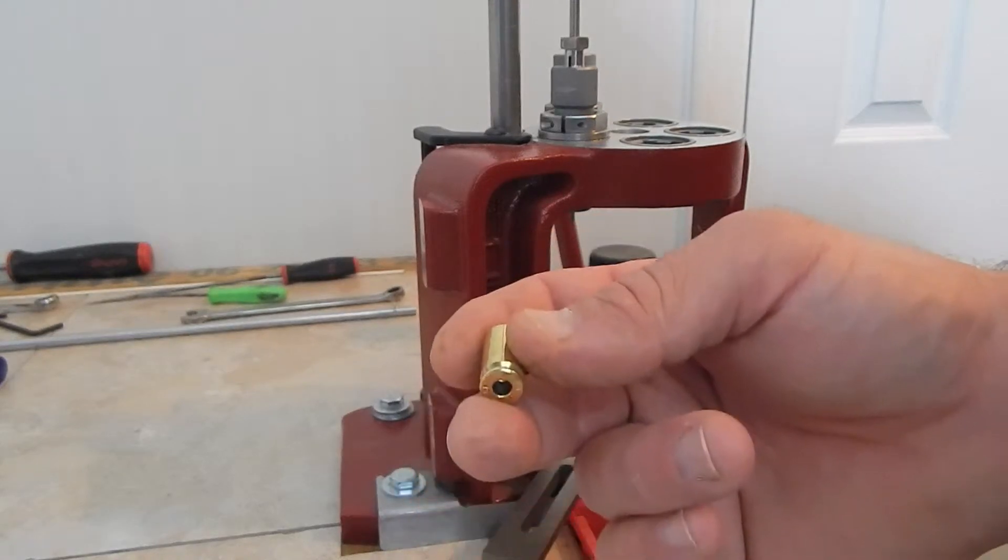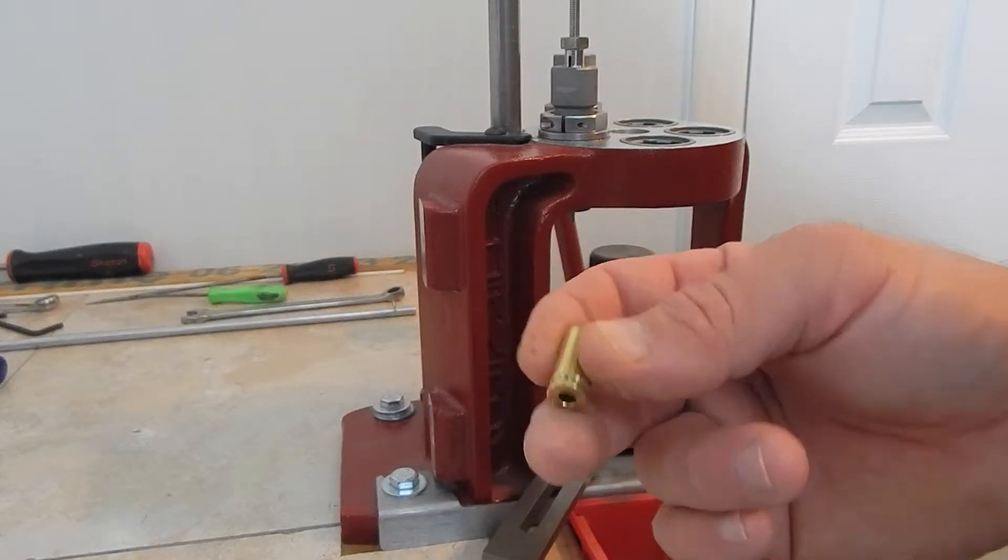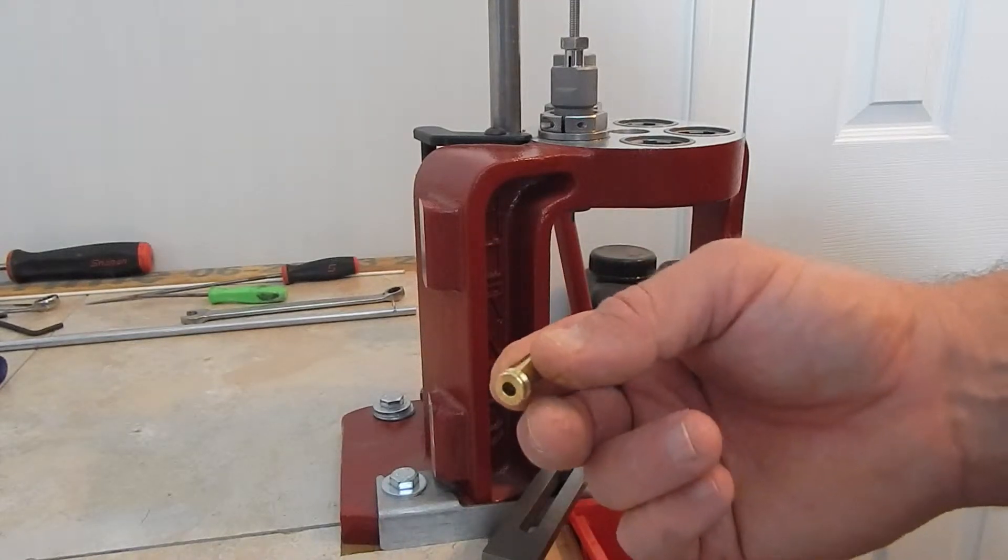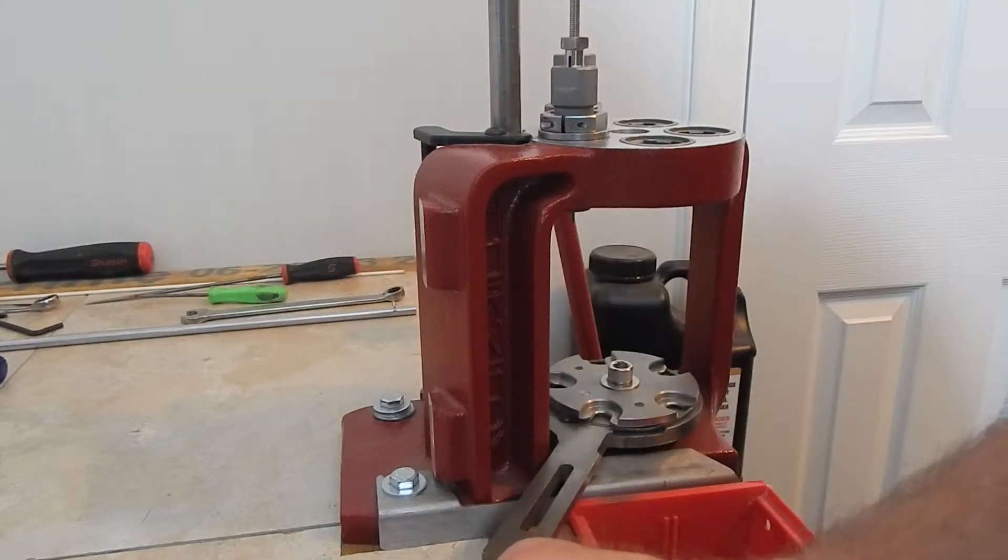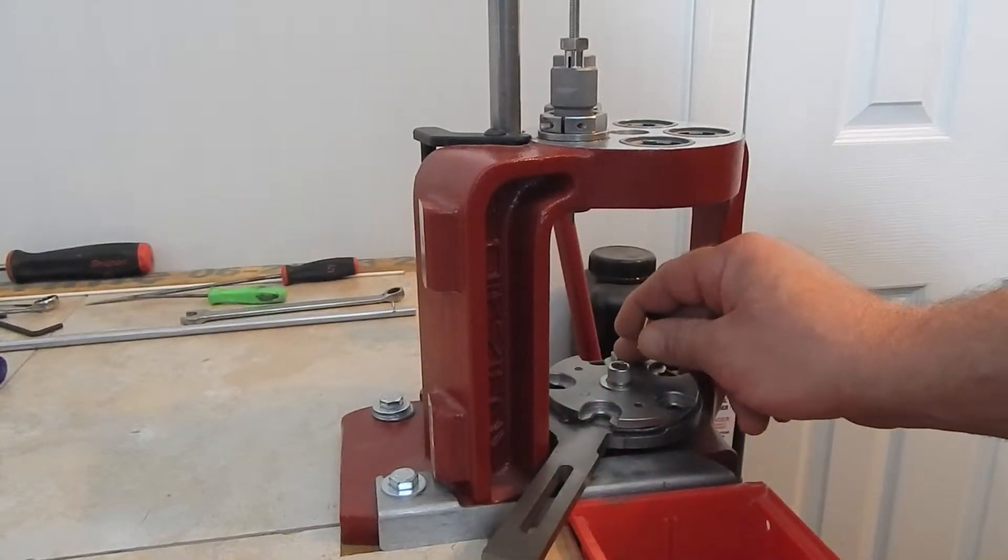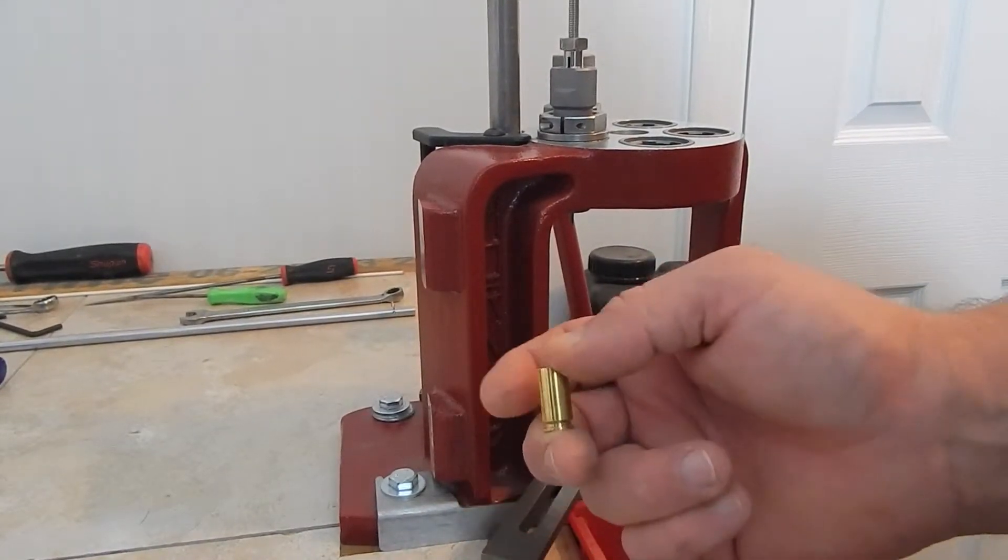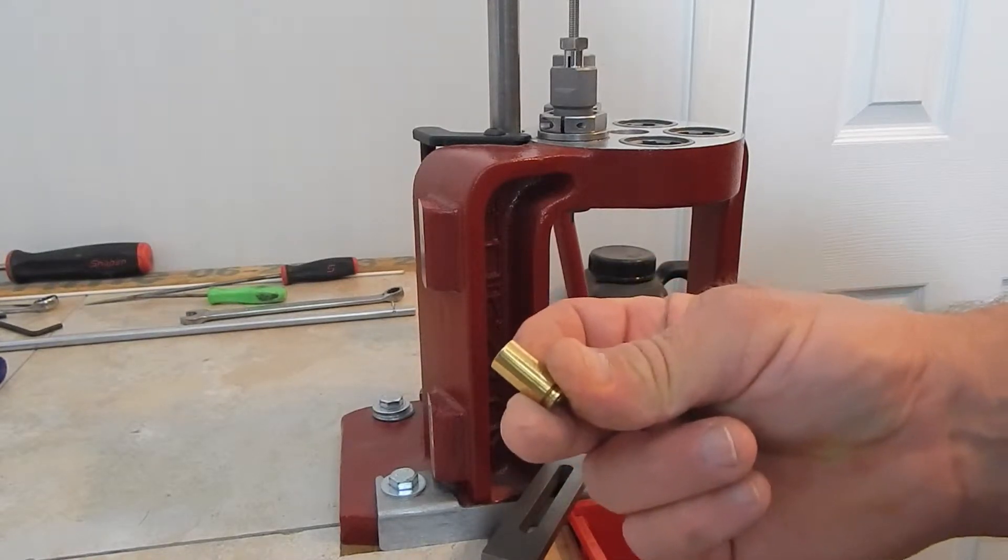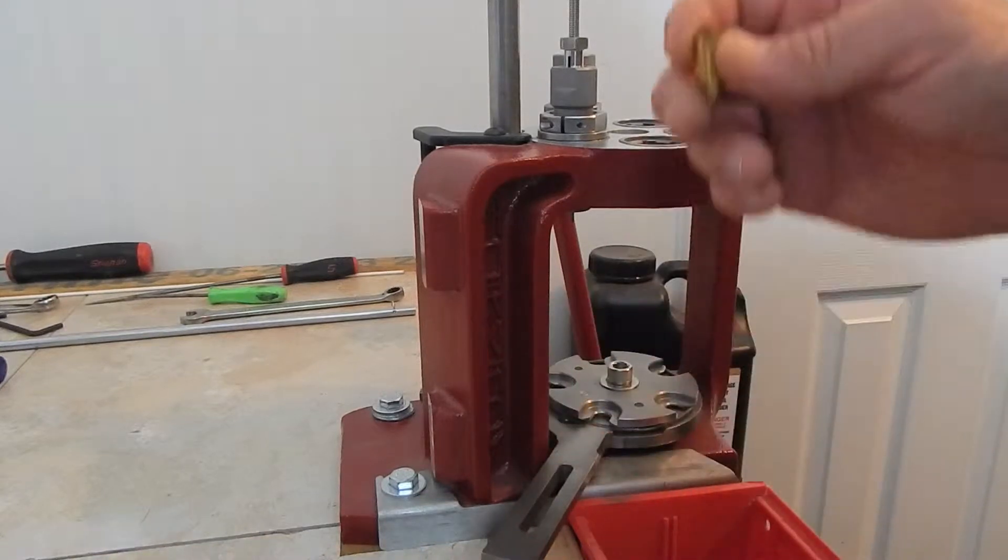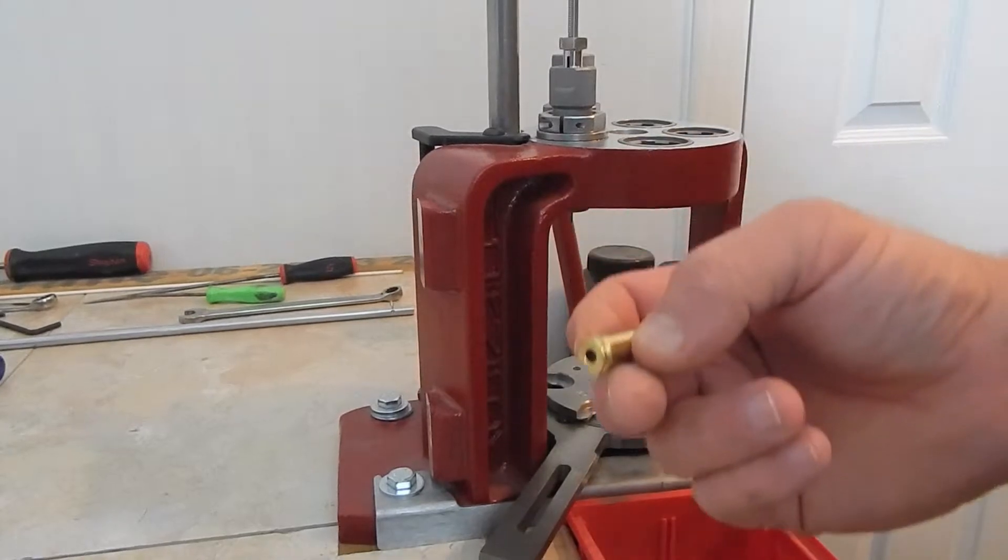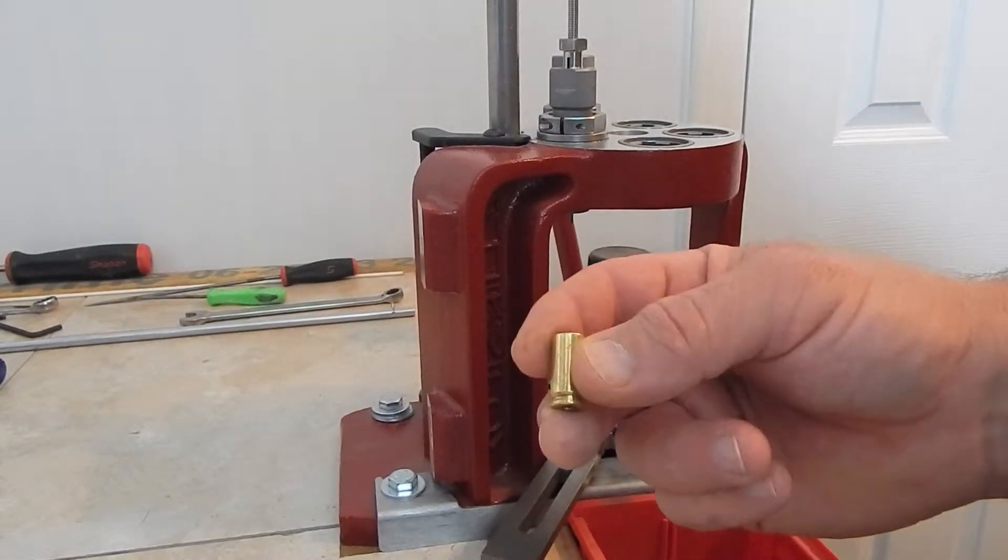I want to take a handful of these and run them through the press and install primers so I can set them on a scale and weigh them with the primer in them, then get a powder charge and pull them back out to see exactly what our powder charge is. We can get that dialed in where we're getting consistent readings. Then I'll be comfortable running this in progressive mode, but until then it might as well be a single stage. I want to do one casing at a time measuring every one of them.